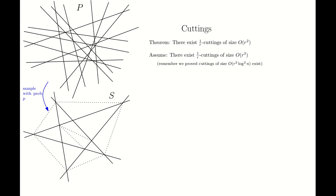I will assume the existence of 1/r cuttings of size r³. In the previous video, we proved the existence of cuttings of size r² log²n. So if r is big enough, the previous proof can be substituted instead of this value r³. For small values of r, the previous proof is not sufficient. But if r is relatively small, small cuttings can be shown to exist using techniques from the VC dimension area. Later in the course, we'll visit those techniques and cover this assumption.